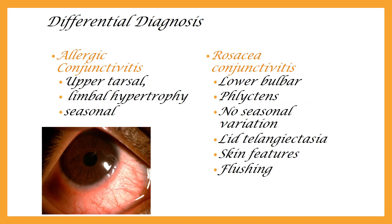Due to the rarity of the disease, we are likely to misdiagnose ocular rosacea. Our first patient was diagnosed as allergic. Certain clues can be helpful. In allergy, the upper tarsal is affected, whereas rosacea conjunctivitis is usually inferior bulbar. In allergy, diffuse congestion can happen but it is usually associated with limbal hypertrophy. Seasonal association is another differentiating feature. Presence of lid margin telangiectasia and facial features is another helpful clue. But many times there are no papules or pustules, and the patient may only have flushing on exposure to heat. So it is only on asking that the patient reveals this.